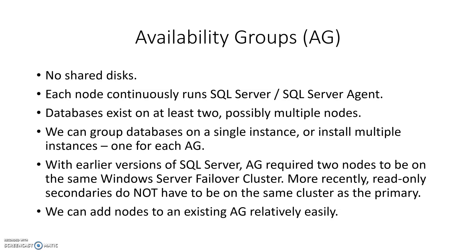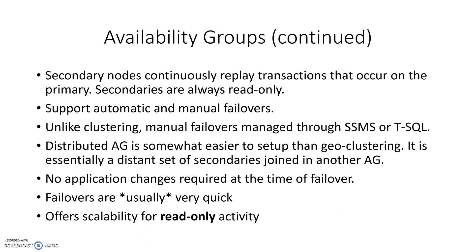We can add nodes to an existing availability group relatively easily. Unlike clustering, which is fairly complex to expand — especially geo-clustering — with availability groups it's a whole lot easier to add local or even remote nodes. Secondary nodes continuously replay transactions that occur on the primary, essentially doing the same thing as what database mirroring used to do. Before database mirroring, we had log shipping, which was a manual process, whereas availability groups is a continuous replay.